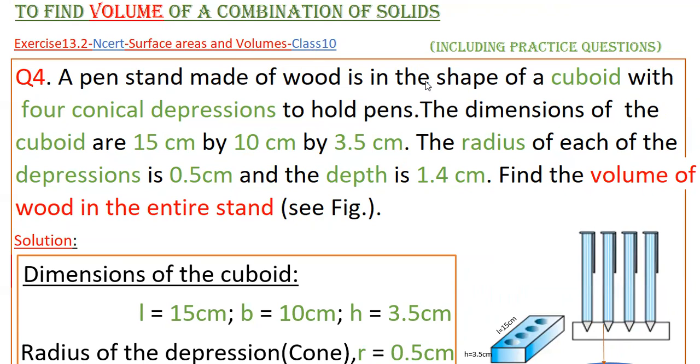A pen stand made of wood is in the shape of a cuboid with four conical depressions to hold pens. The dimensions of the cuboid are 15 centimeters by 10 centimeters by 3.5 centimeters. The radius of each of the depressions is 0.5 centimeters and the depth is 1.4 centimeters. Find the volume of wood in the entire stand.